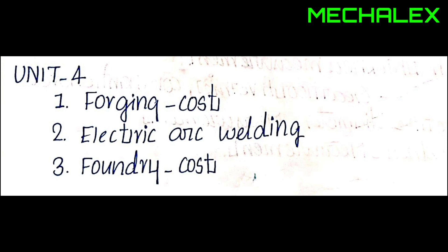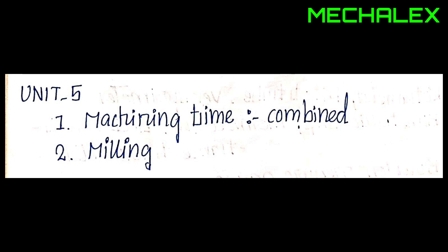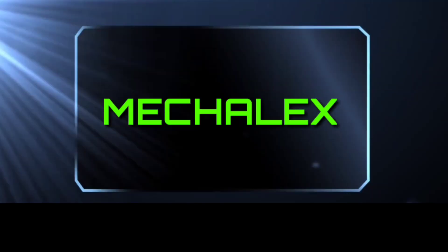There will be another Unit 4. Unit 5 is easier, but you may encounter complicated problems. The first question is machining time. In our books, we have to show the first and simple operations. You will need to answer a couple of questions about machining time, as well as milling — two questions on milling.